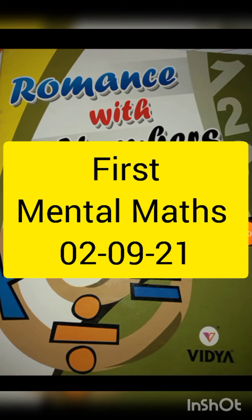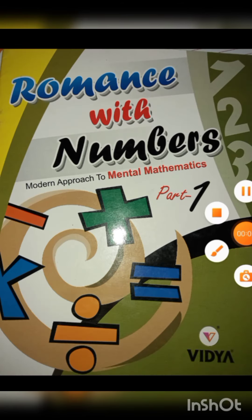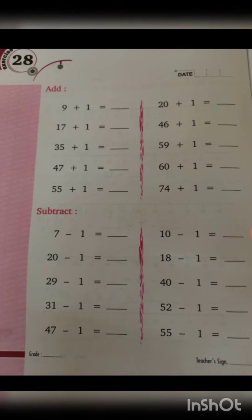And now friends, we are taking romance with numbers. We are mental maths. So we are going to page number 32, exercise number 28.